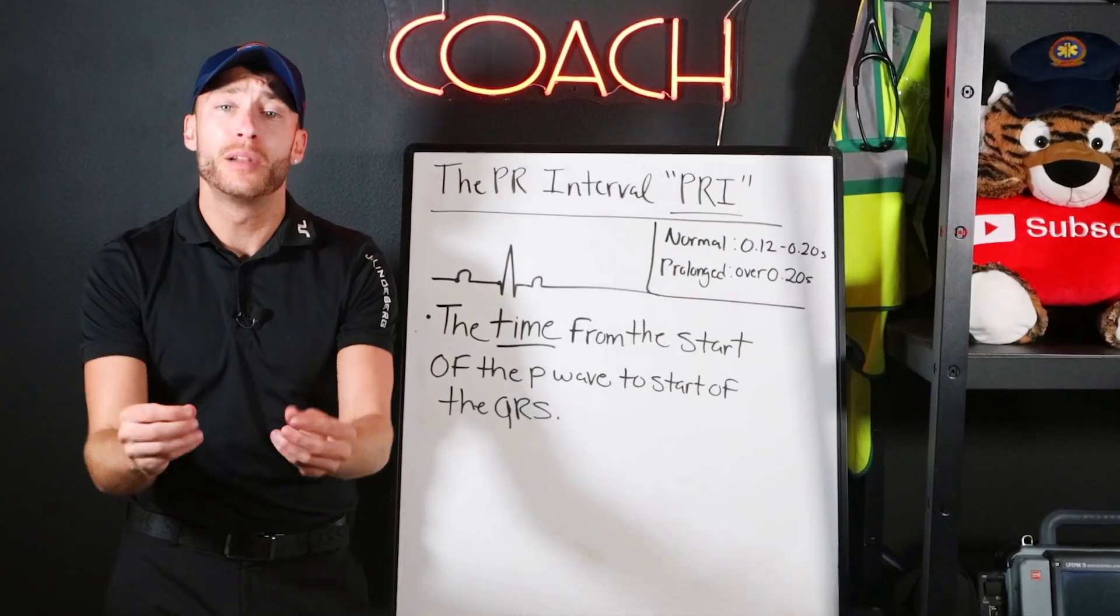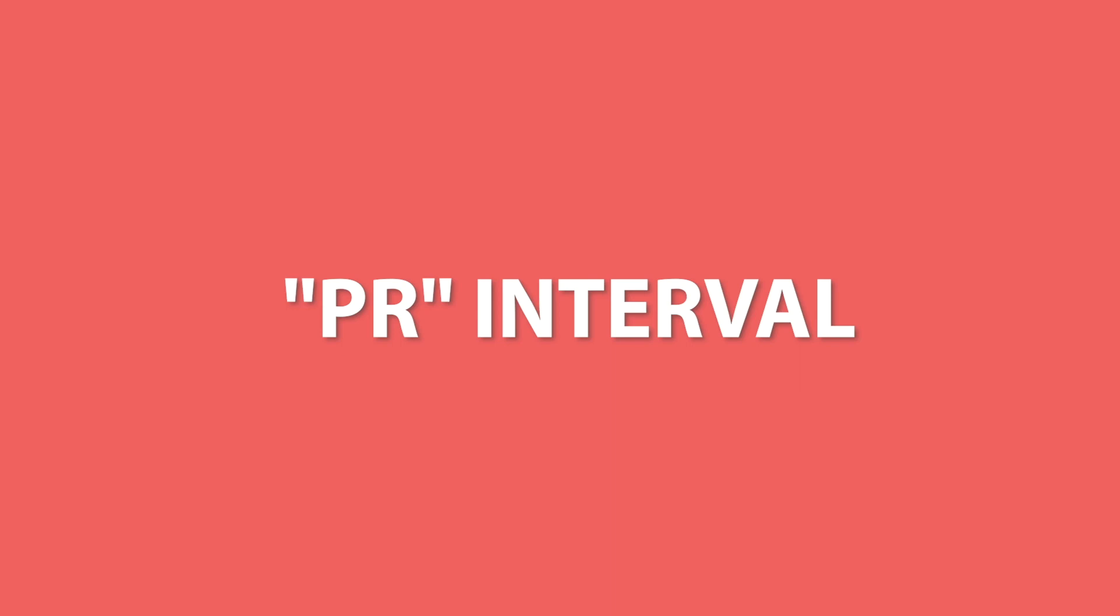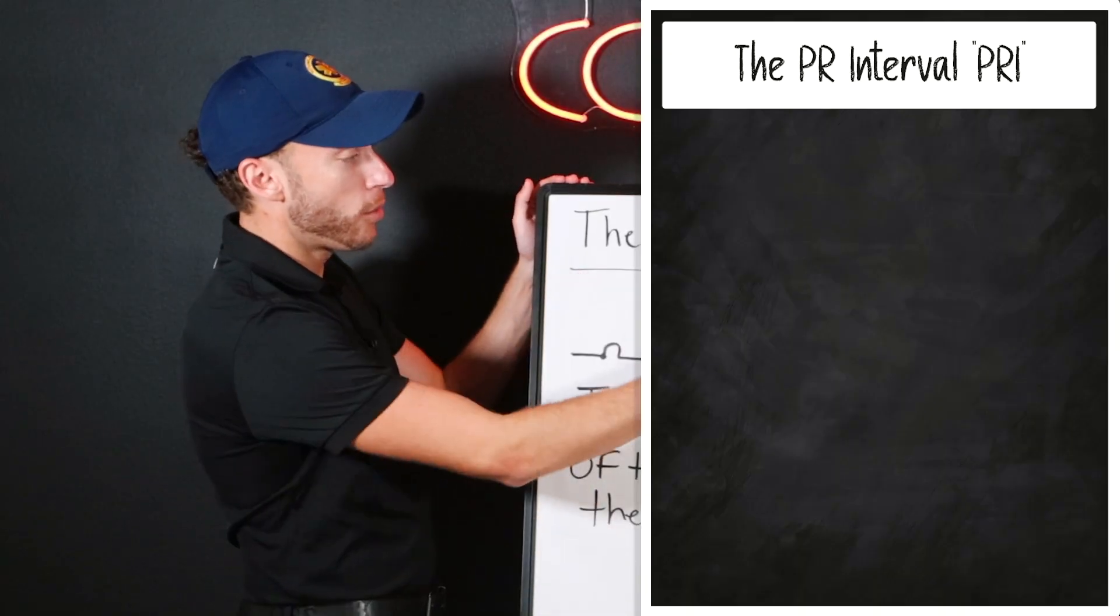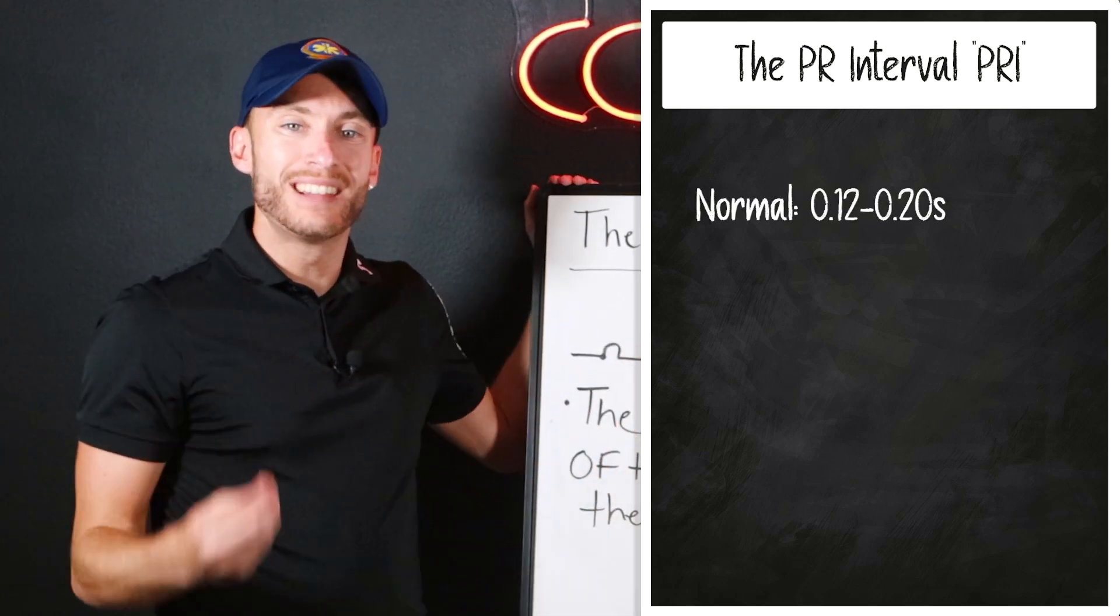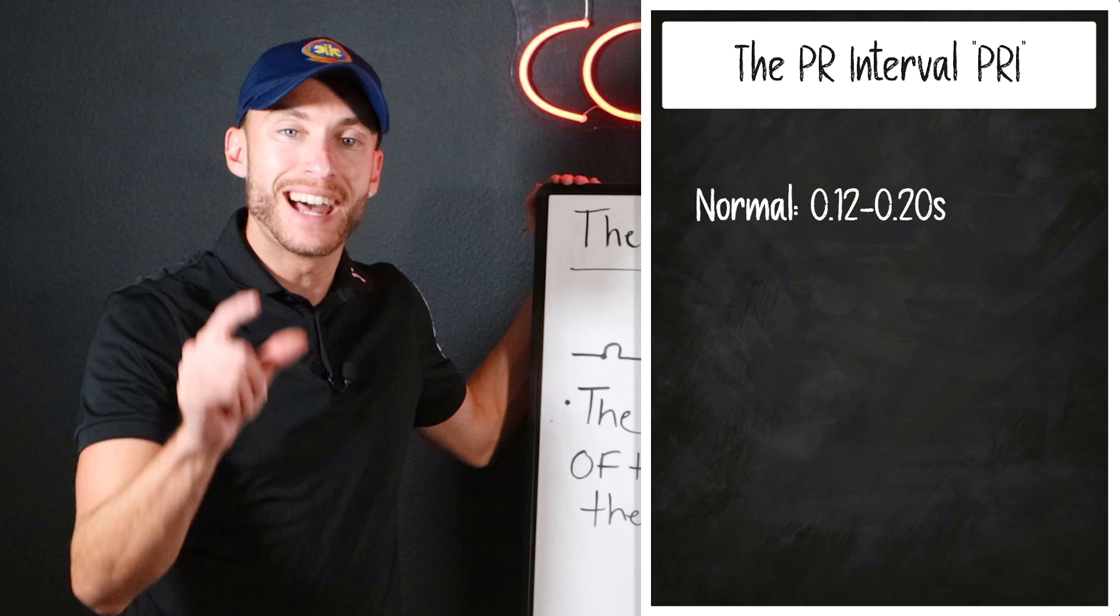Heart blocks are not complicated, but you have to understand the PRI, the PR interval, to know it cold. So here it is. The PR interval, normal, is 0.12 to 0.20 seconds.